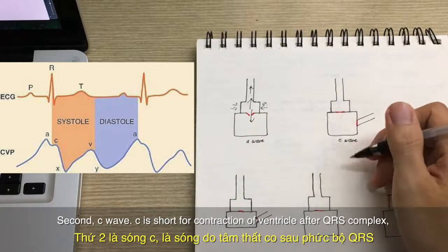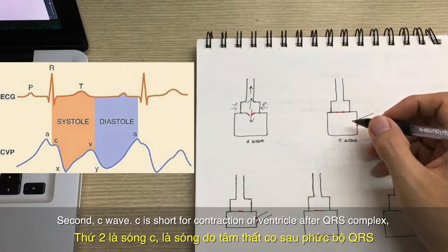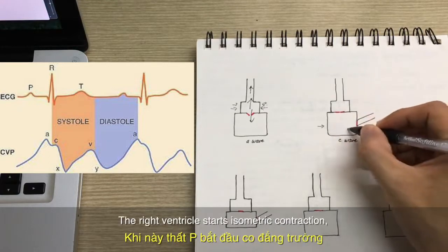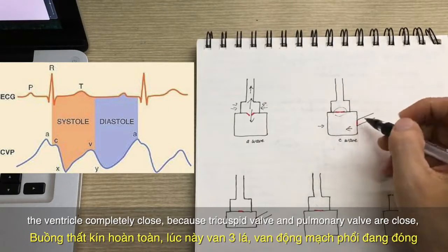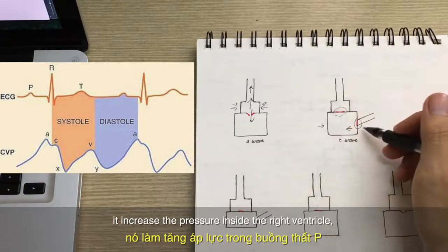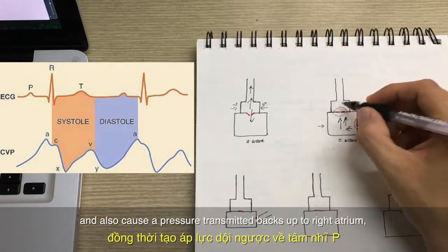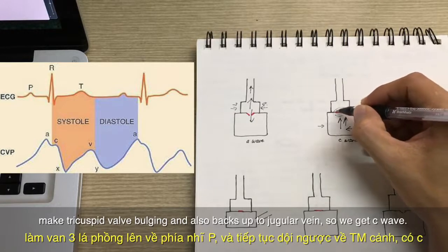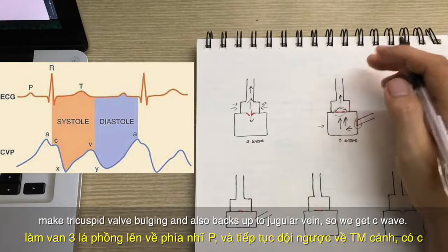And the second is C wave. C is short for contraction of the ventricle after QRS complex, I mean depolarization of the ventricle. So the right ventricle starts isometric contraction. The ventricle is completely closed because tricuspid valve and mitral valve are closed. And it increases the pressure inside the right ventricle. And this pressure transmitted backs up to the right atrium and makes the tricuspid valve bulging. And it also backs up to the jugular veins. So we get the C wave.